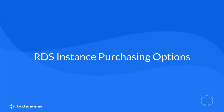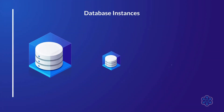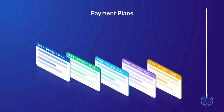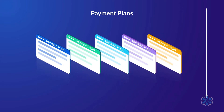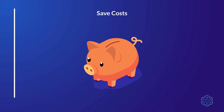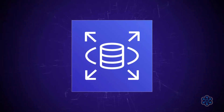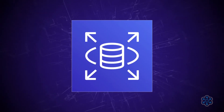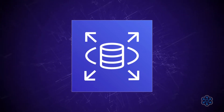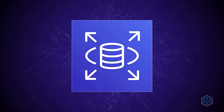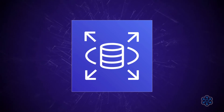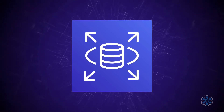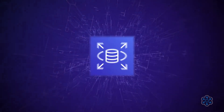Hello and welcome to this lecture where I want to cover a number of different purchasing options that are available and the associated costs. You can purchase database instances through a variety of different payment plans, designed to help you save costs by selecting the most appropriate option for your deployment. The different payment options within RDS include on-demand instances, on-demand instances with Bring Your Own License, reserved instances, reserved instances with Bring Your Own License, and serverless.